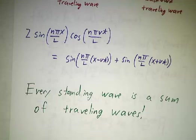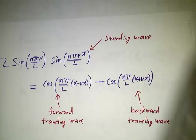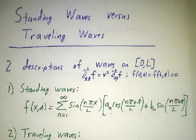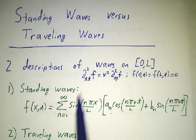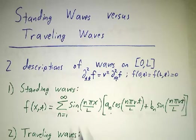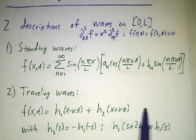And so if you have an infinite sum of standing waves, you express each term as a sum of traveling waves, and then the whole thing becomes a sum of traveling waves. So if you have a solution of this type, you can always rewrite it as a solution of this type. Now to go the other direction, we need to do some Fourier series.